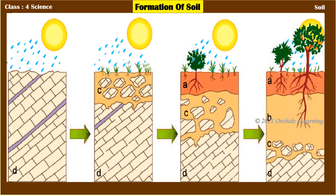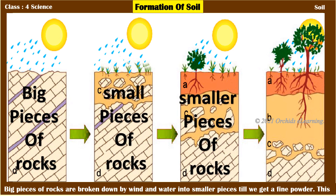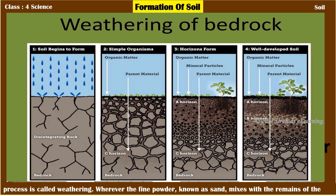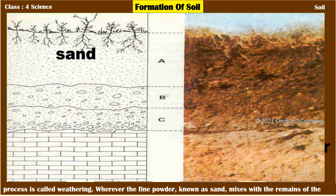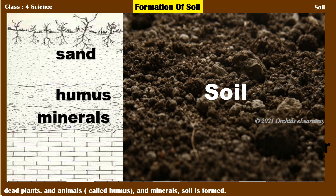Formation of soil: Big pieces of rocks are broken down by wind and water into smaller pieces till we get a fine powder. This process is called weathering. Wherever the fine powder, known as sand, mixes with the remains of dead plants and animals — called humus — and minerals, the soil is formed.